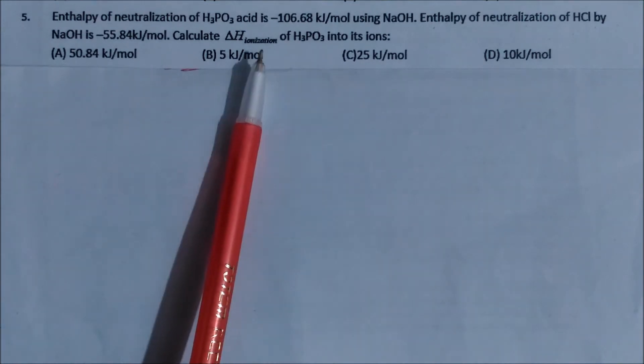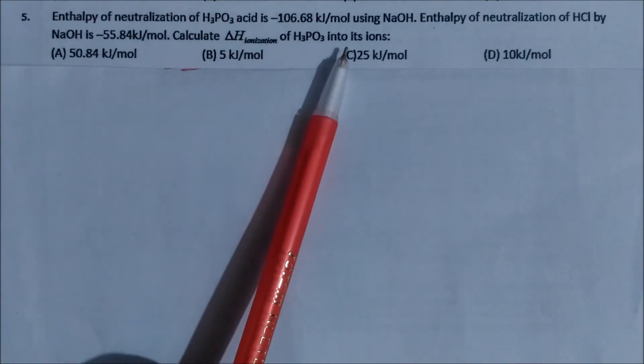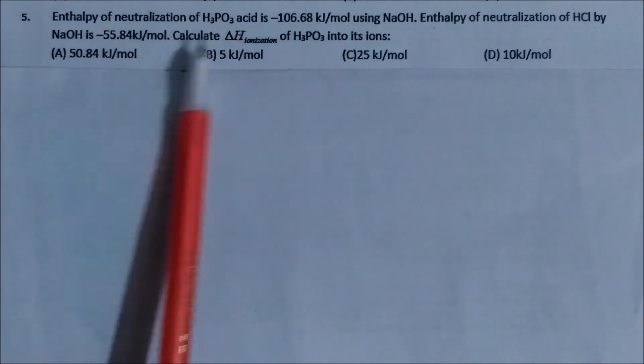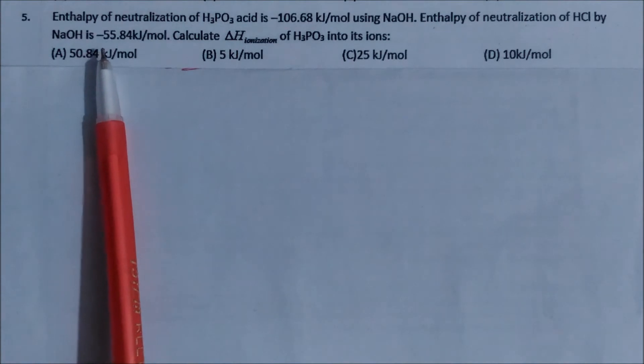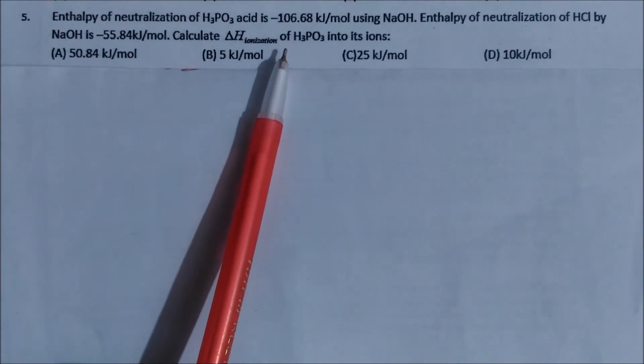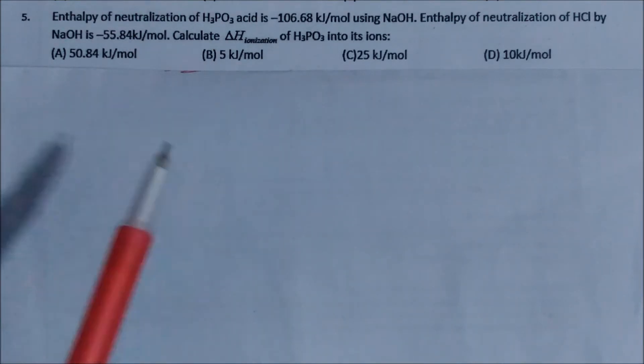What is the amount of enthalpy of ionization required to convert it to ions? When they convert to ions, this will be utilized by the HCl and sodium hydroxide, which is given as minus 55.84 kJ. So we will check out how many H+ is given by H3PO3.